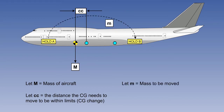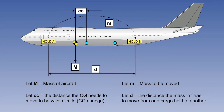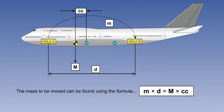Let the letter m represent the mass to be moved. In this case, the mass would have to be moved from the forward hold A to the aft hold B, because the centre of gravity has to move in a rearward direction. Now, let letter D represent the distance the mass m has to move from one cargo hold to the other — in this case from front to rear. The mass to be moved, little m, multiplied by the distance it moves, D, is equal to the total aeroplane mass, big M, multiplied by the distance the centre of gravity moves, CC. This is expressed as the formula: m times D equals M times CC.